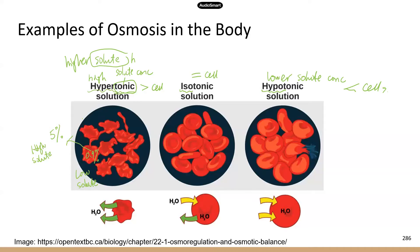In an isotonic solution, there is constantly water movement, but the amount of water moving in is the same as the amount moving out, because the solute concentrations are the same inside and outside the cell. So the rate of water movement is balanced, and the cells maintain their regular shape — you won't see any changes.